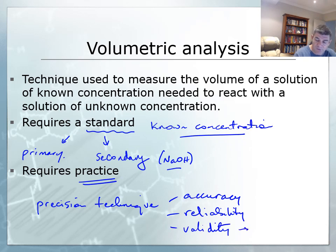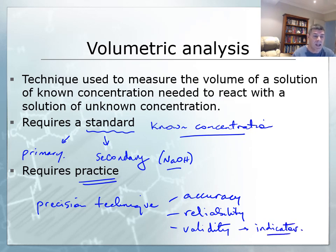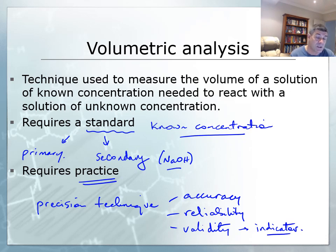Validity often relates to a very important component of volumetric analysis, which is the selection of an indicator. It's not a simple matter of just picking any old indicator — different indicators can be used for different types of combinations of acids and bases, and we'll explore that as we go further into this section of the module.